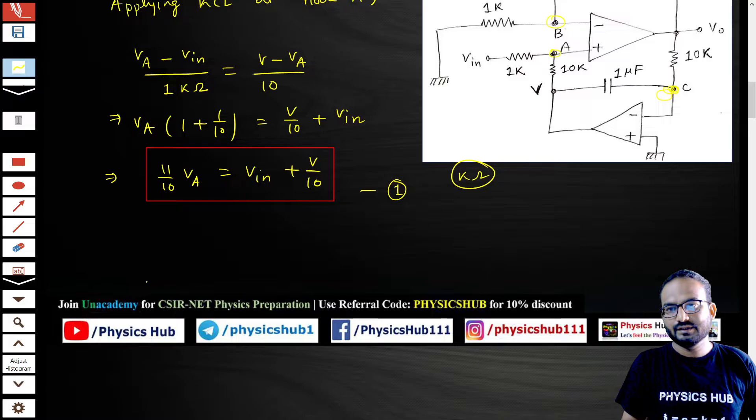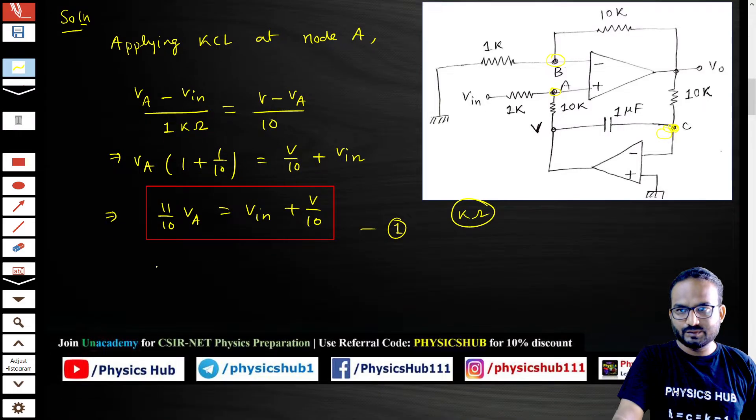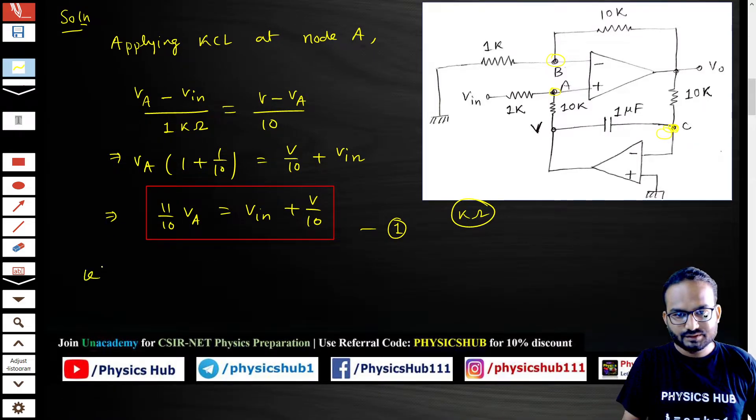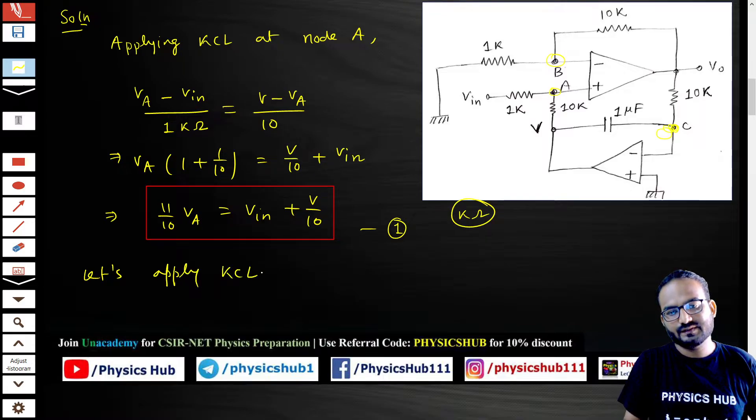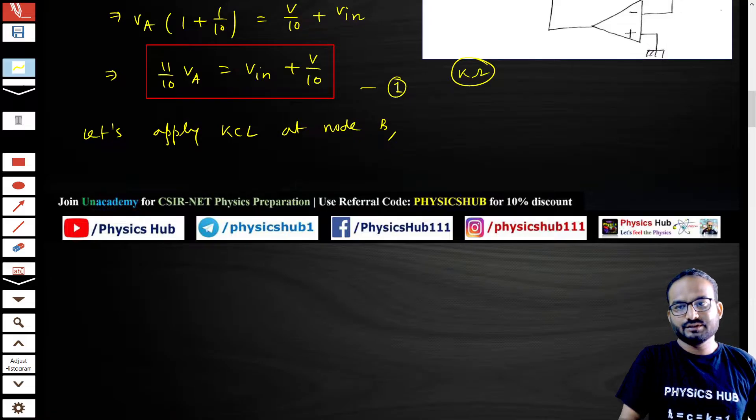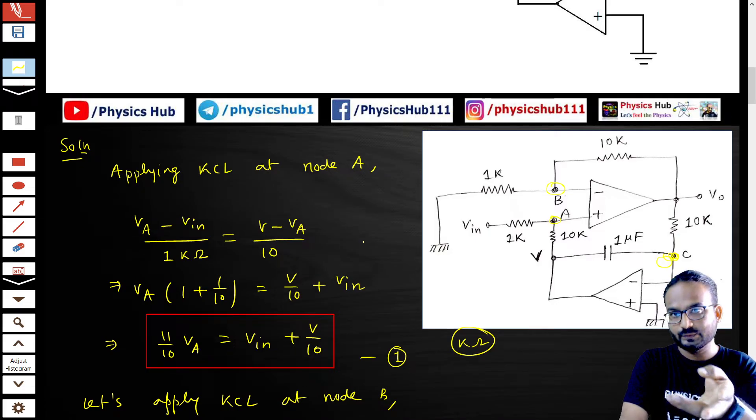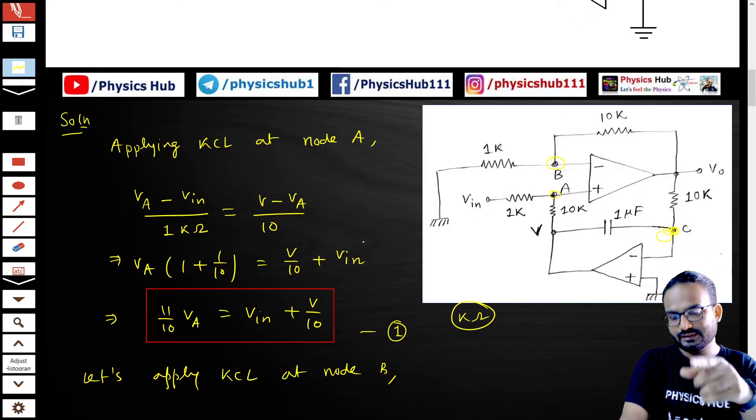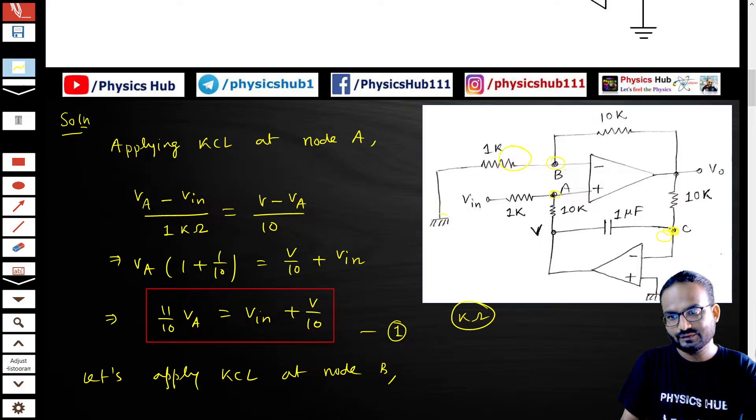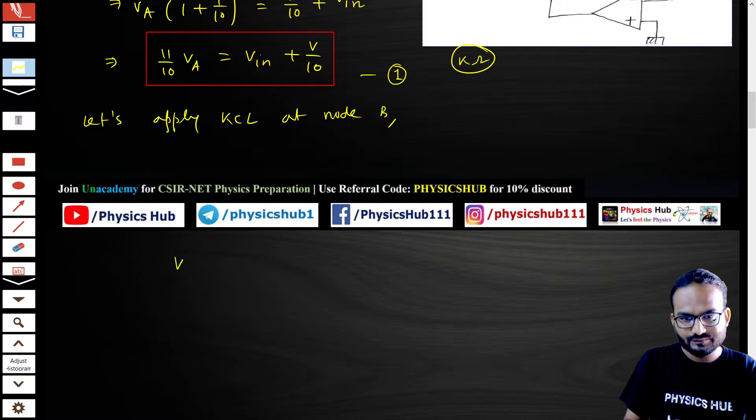Now let's apply KCL at node B. Current entering the junction equals current leaving the junction. If you look at voltage V, it will be equal to voltage up there from the properties of an op-amp. You can see you have a ground here, so what we can write for node B: V_A minus 0 by 1, because V_B equals V_A.